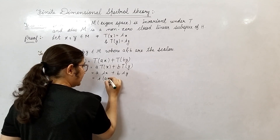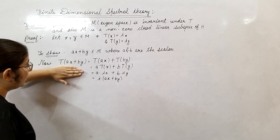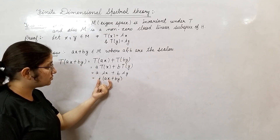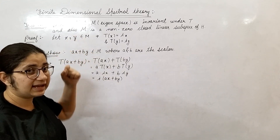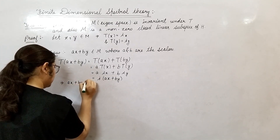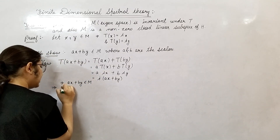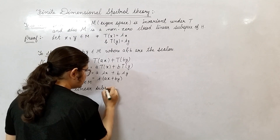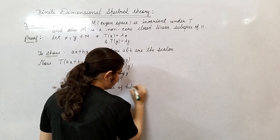Lambda is common, so we factor it out to get lambda times (AX plus BY). Since applying operator T on AX plus BY gives lambda times (AX plus BY), this means AX plus BY belongs to eigenspace M. This implies AX plus BY belongs to eigenspace M, and therefore M is a linear subspace of Hilbert space H.